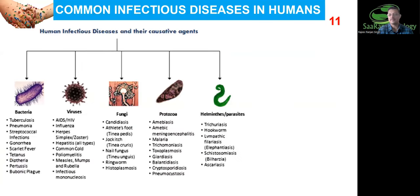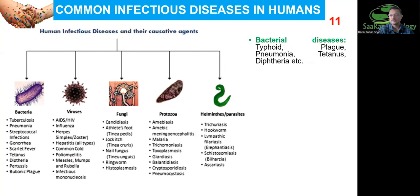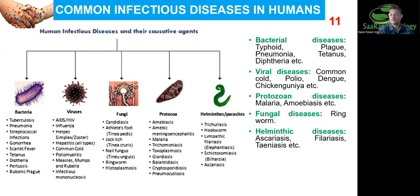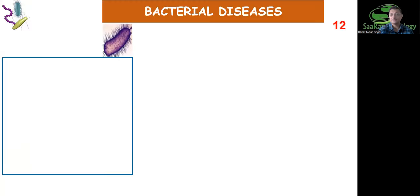Common infectious diseases in humans can be caused by bacteria, viruses, fungi, protozoa, and helminths. We will read about typhoid and pneumonia as bacterial diseases; common cold, dengue, and chikungunya as viral diseases — chikungunya has been included in the syllabus this year. We'll study malaria and amoebiasis as protozoan diseases, ringworm as a fungal disease, and ascariasis and filariasis as helminthic diseases.